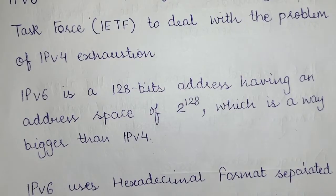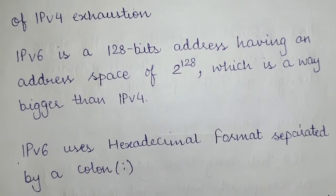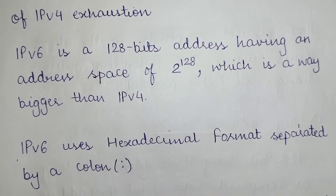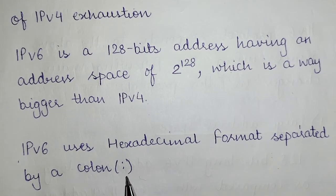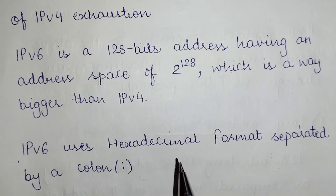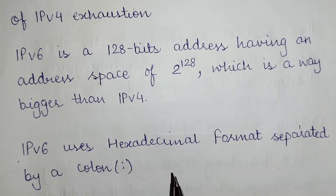IPv6 uses hexadecimal format separated by a colon. So unlike the decimal notation in IPv4, here we have the colon notation. IPv6 uses hexadecimal format whereas IPv4 uses the decimal format.